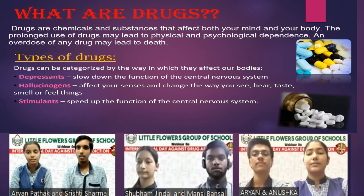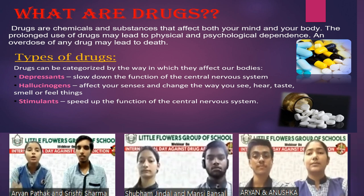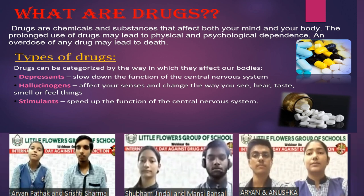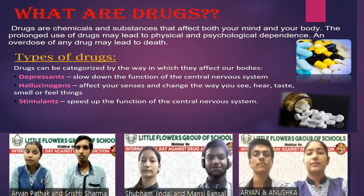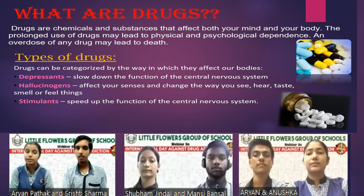What are drugs? Drugs are chemical substances that affect your body and your mind. The prolonged use of drugs may lead to physical and psychological dependence. An overdose of any drug may lead to death. There are different types of drugs, which are categorized based on the way they affect your body.